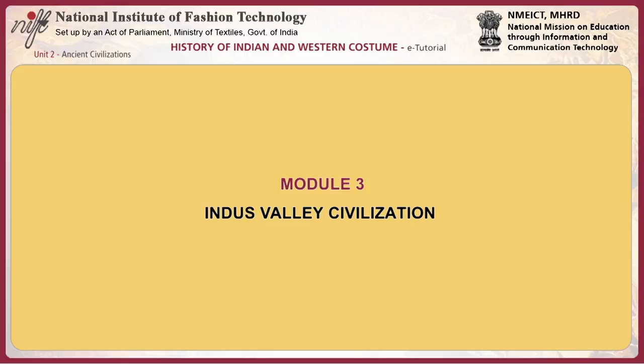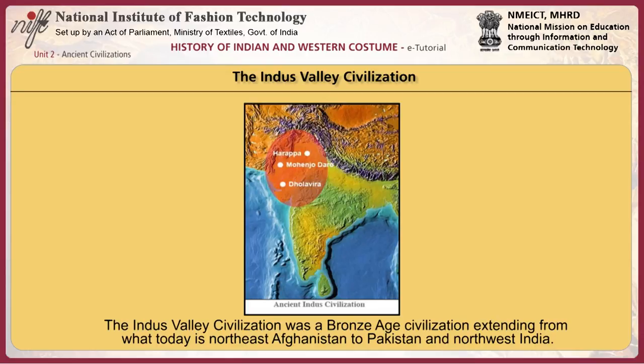This module focuses on the Indus Valley Civilization, costume and culture. The Indus Valley Civilization was a Bronze Age civilization extending from what today is northeast Afghanistan to Pakistan and northwest India. The two great river basins of the Indian subcontinent, the Indus and the Ganges, were the earliest centers of urban development in South Asia. These cities were contemporary with those of Ur and Babylon in Mesopotamia and the Old Kingdom cities of Egypt. The Indus had a writing system yet to be deciphered, highly developed visual arts, and sophisticated technologies such as pottery and textile production.